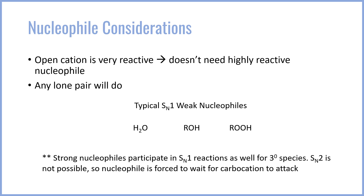It's important to note that strong nucleophiles — anionic nucleophiles — can participate in SN1 reactions. In fact, for a tertiary species, all substitution must be through SN1 because it's far too hindered for an SN2 reaction.